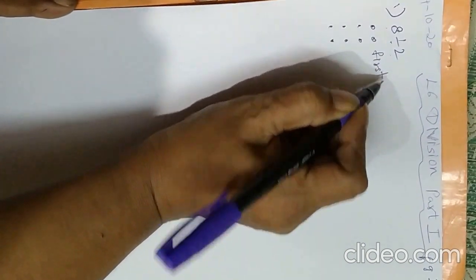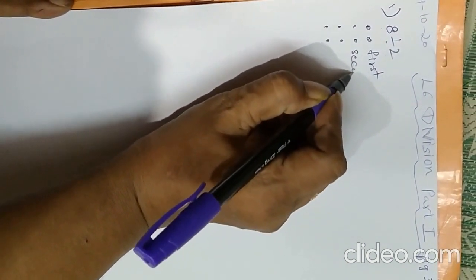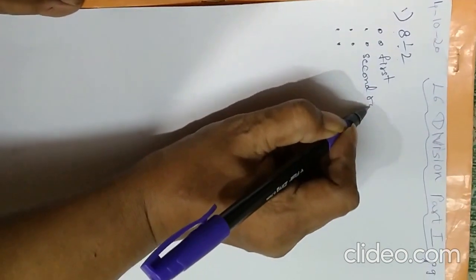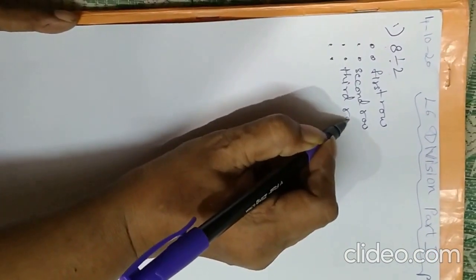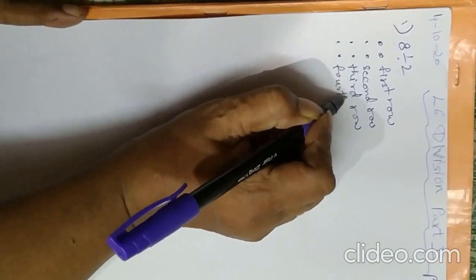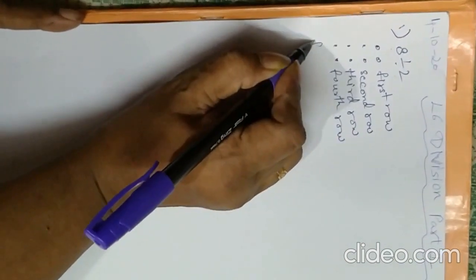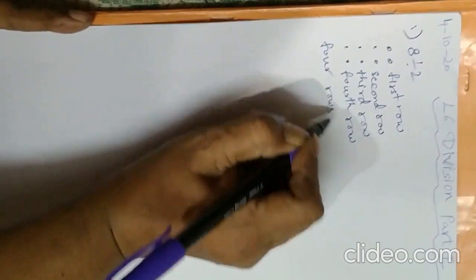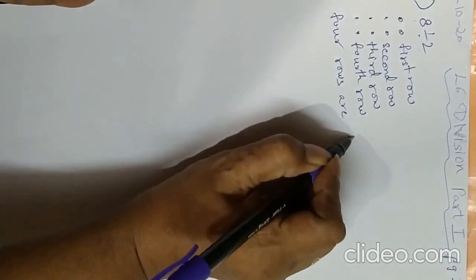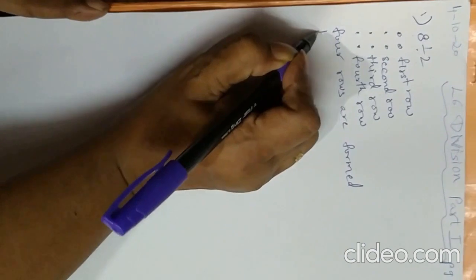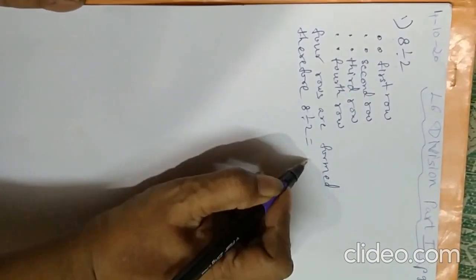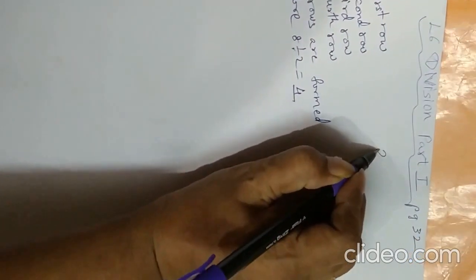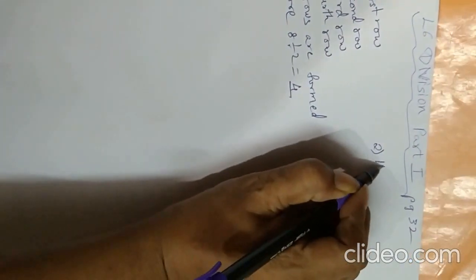After making the dots, you will write here: first row, second row, third row, and fourth row. So how many rows are formed? Four rows are formed. Therefore, 8 divided by 2 is equal to 4. Do you understand how to do it?